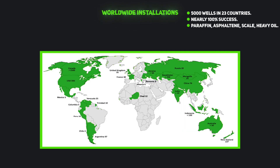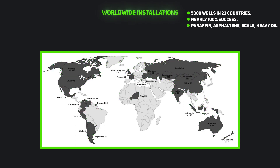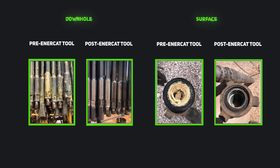The Enercat tool has been installed in over 5,000 wells in 23 countries with nearly 100% success when installed properly. Its prevention of production problems such as paraffin crystallization and deposition, scale deposition, high viscosity, and emulsion is proof that Enercat works.